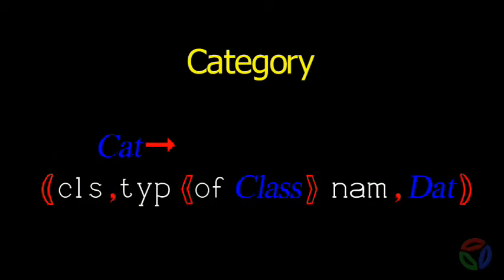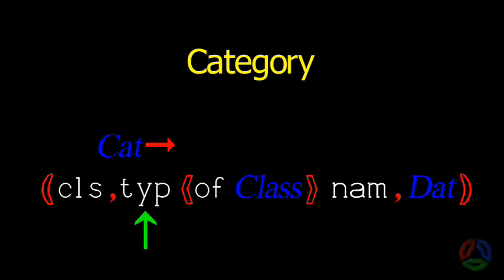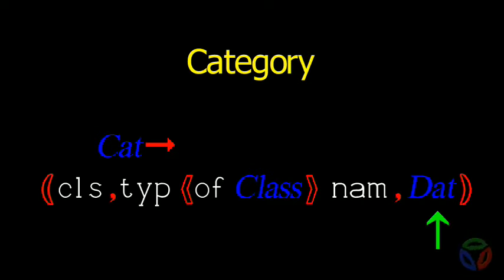The specific keywords corresponding to category declare the kind of item being declared. In this discussion, it is either a class, a type, a name, or a datum whose specific keyword denotes a storage class. Storage classes and issues dealing with scope will be discussed in a later lesson.